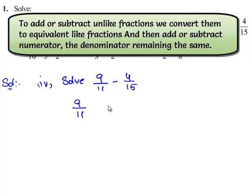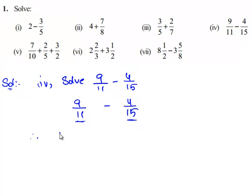To obtain a common denominator, we need to find the LCM of 11 and 15. Since 11 and 15 do not have any factor in common, the LCM of 11 and 15 is equal to 11 times 15, which equals 165.